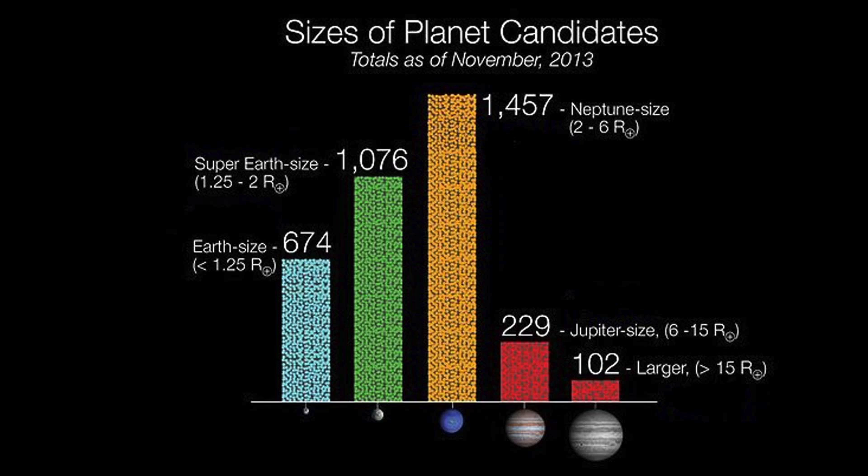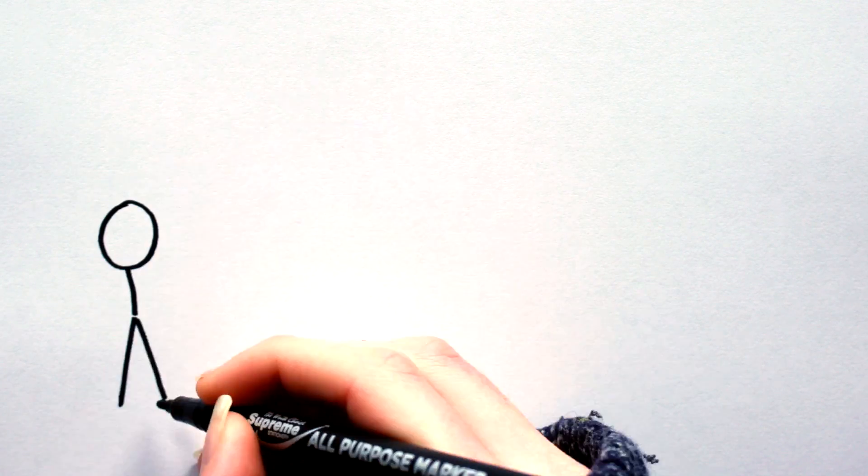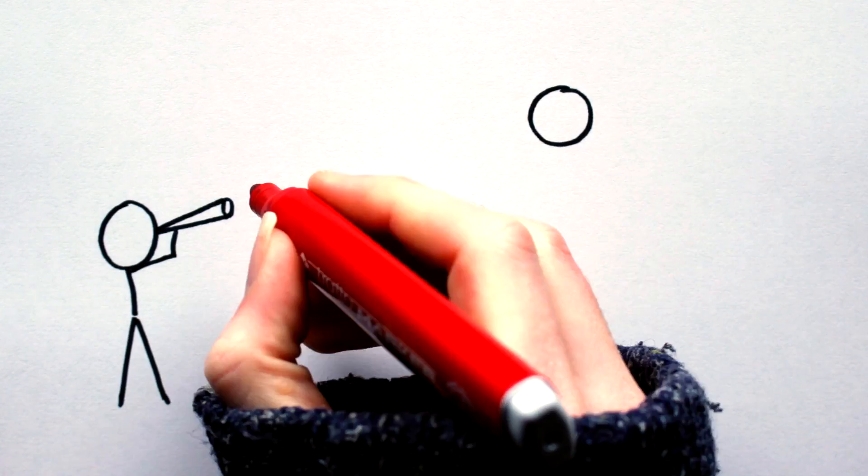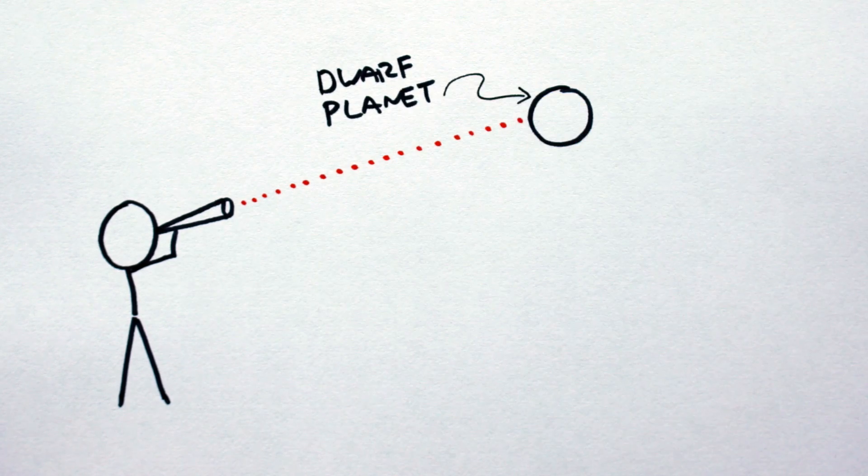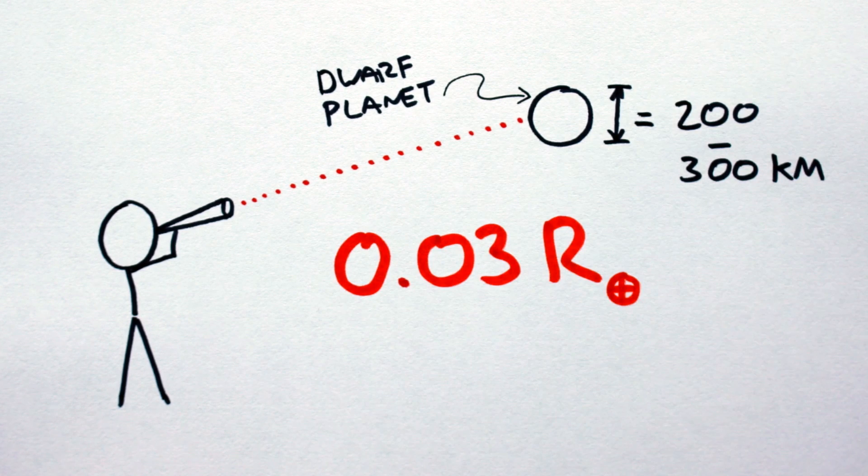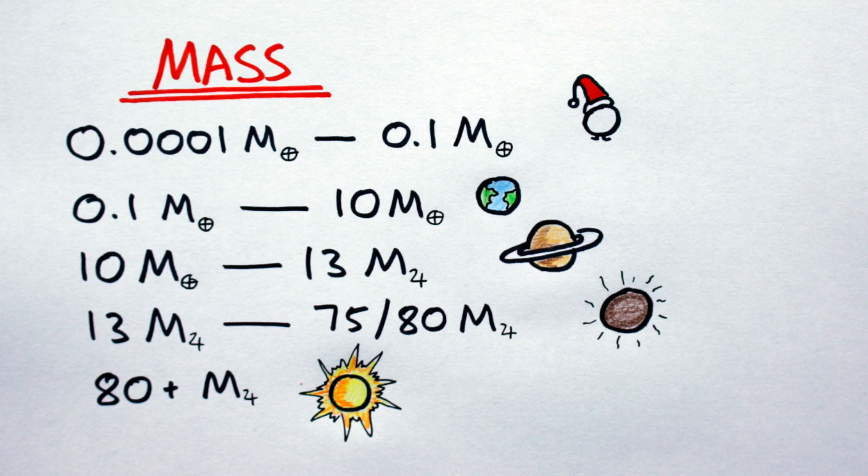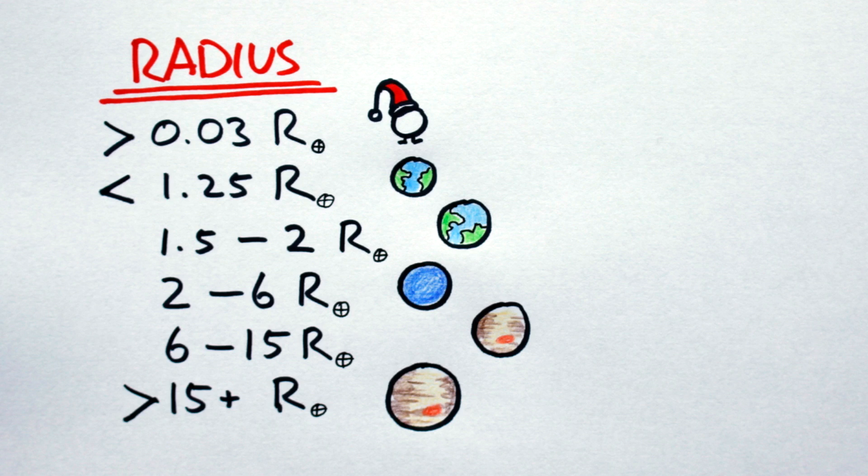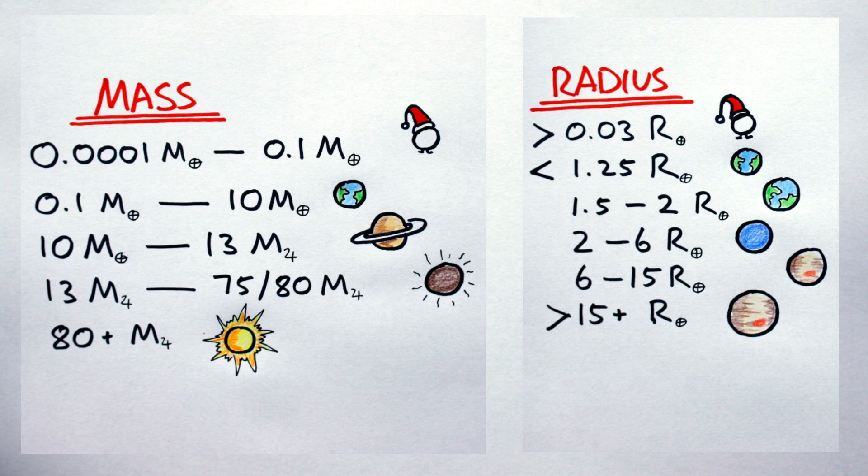That's because we have yet to detect any extrasolar dwarf planets. But based on observations of our solar system's dwarf planets, scientists have demonstrated that bodies 200 to 300 kilometers in size tend to be in hydrostatic equilibrium. So we can tentatively set a radius of 0.03 as a lower limit for dwarf planets.